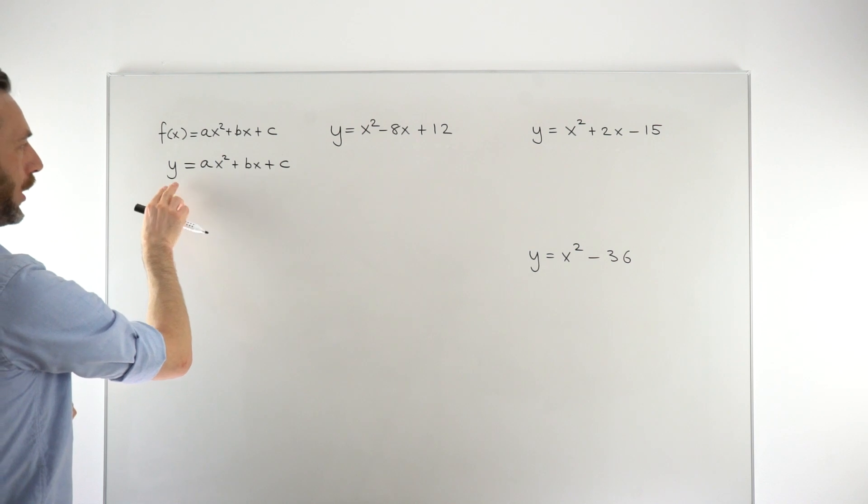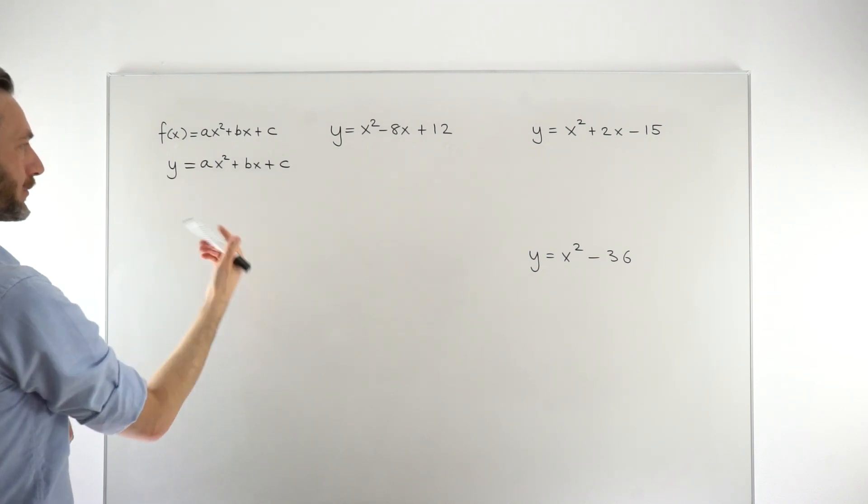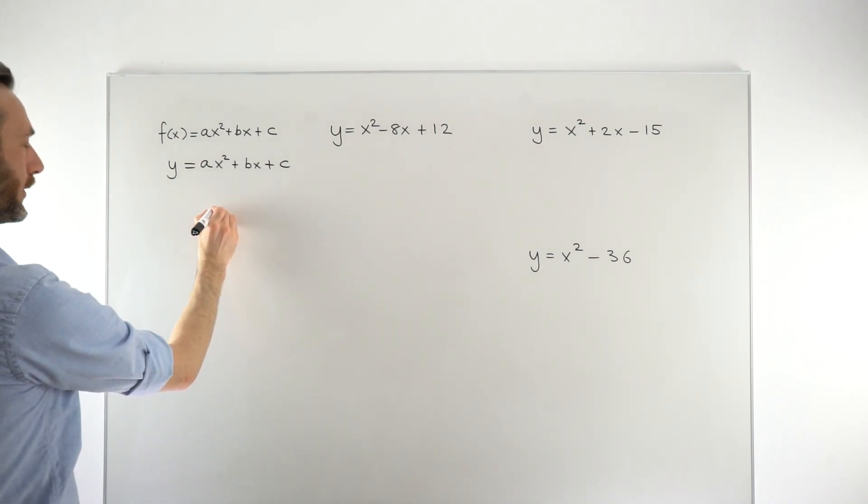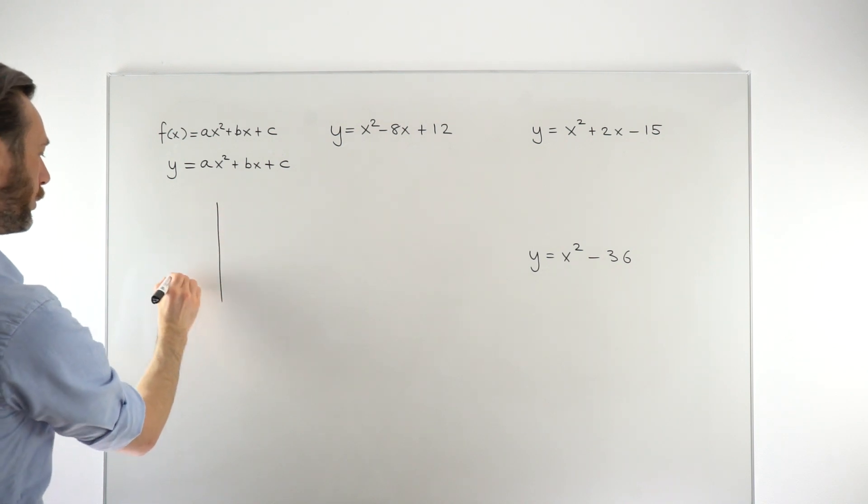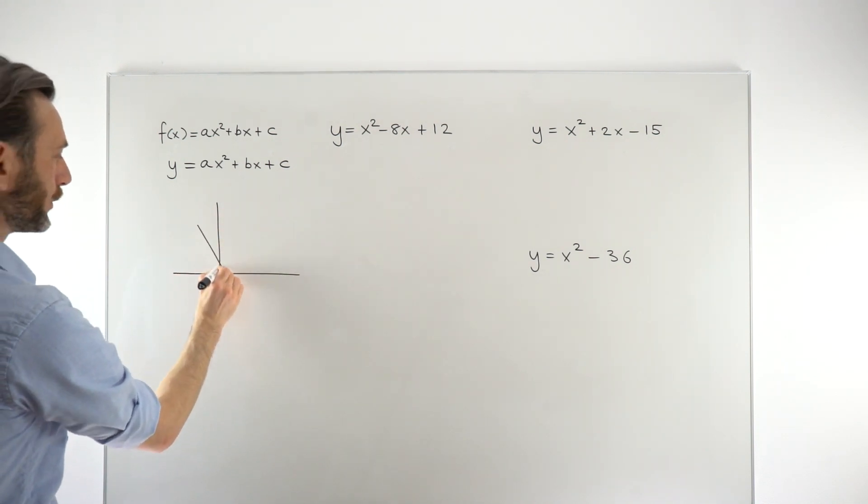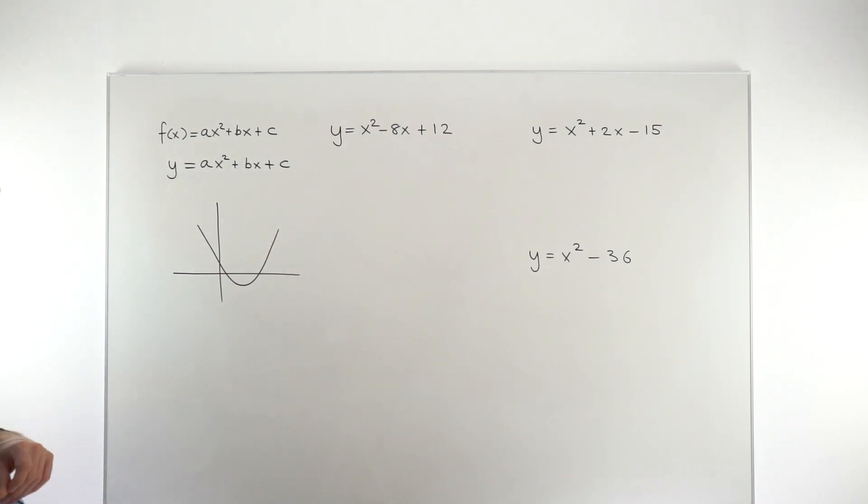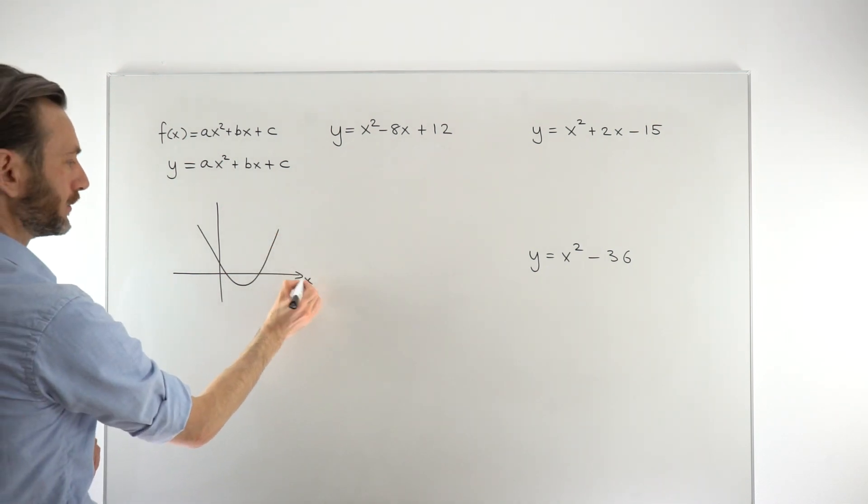We've changed our f of x to y. So now we're thinking about the graph of this function. In general, these quadratic functions make parabolic graphs, which are graphs which are shaped like a u, like a u-shaped kind of graph.